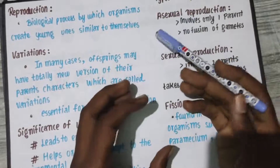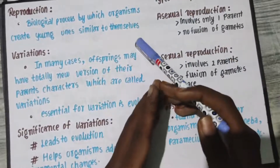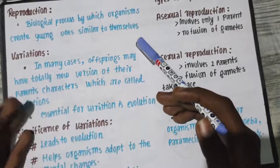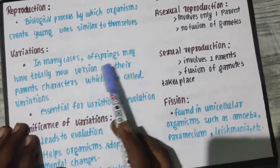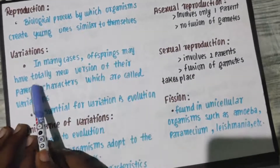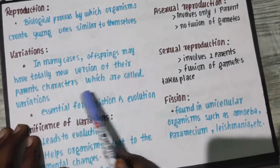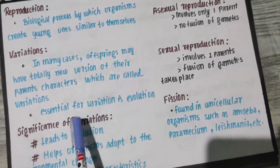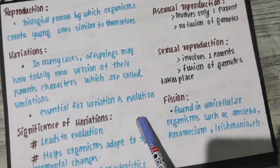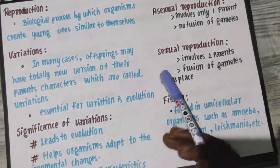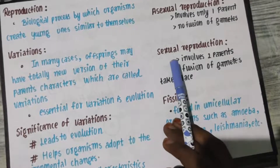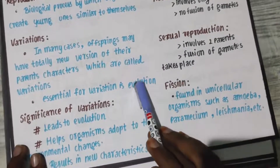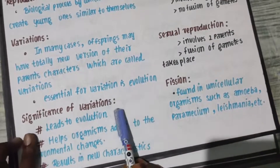These variations are very important for evolution. Offspring may have totally new versions of their parent characters, and these variations are very important for evolution. If an organism is evolving, variation is very important. That is the significance of variation.